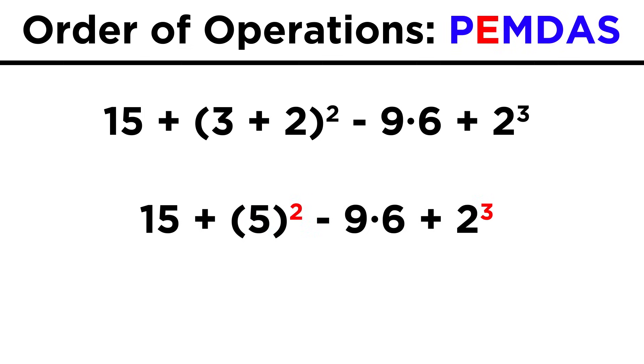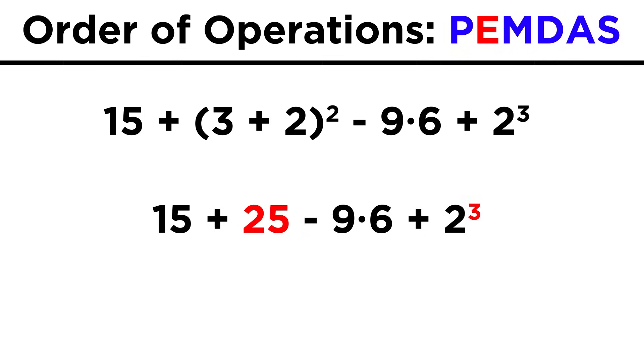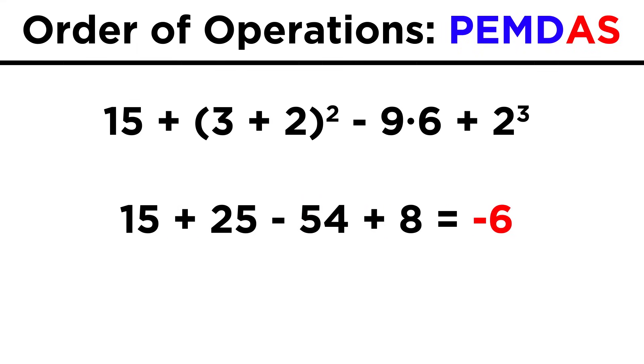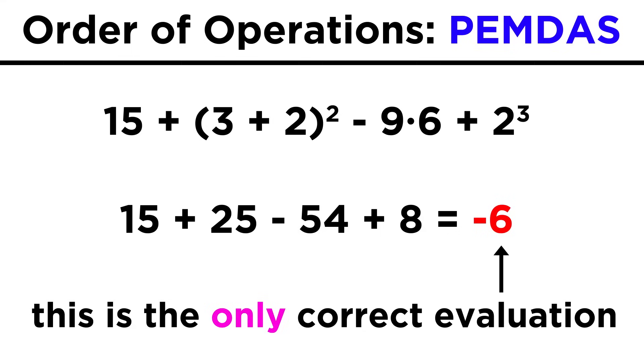Then we do any exponents, five squared is twenty-five, and two cubed is eight. Now we have to do the multiplication before we do any addition. So nine times six is fifty-four. Now we can just add and subtract across. Fifteen plus twenty-five minus fifty-four plus eight equals negative six. This is the only correct evaluation of this expression when we follow the order of operations.